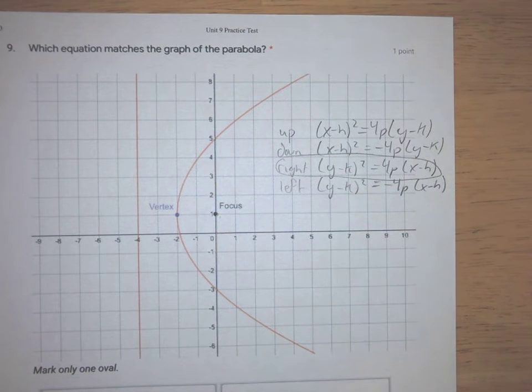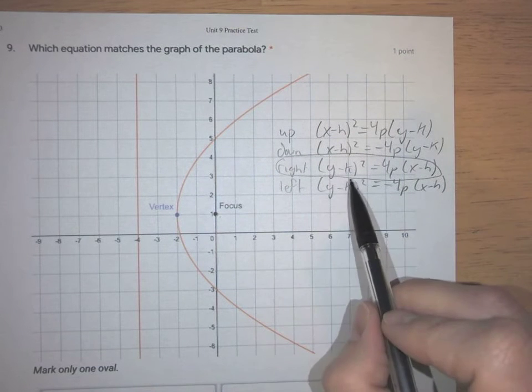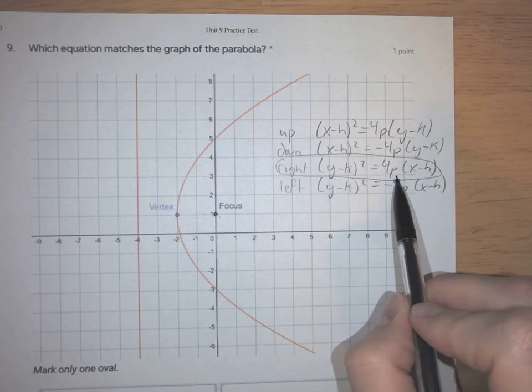Now, what we need to find to finish this equation is we need an h, a k, and a p.